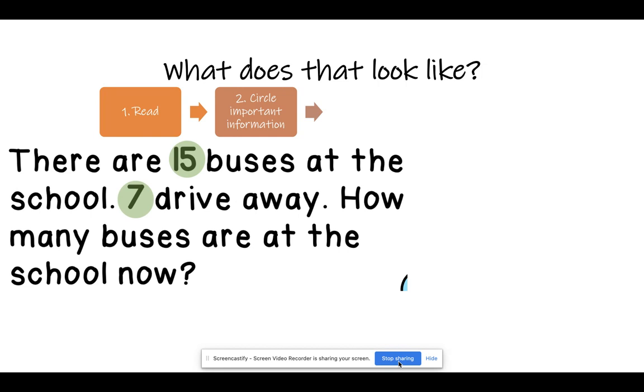Then 7 is also important because that is how my number is going to change. That means I can write my number sentence. 15 minus 7 equals.